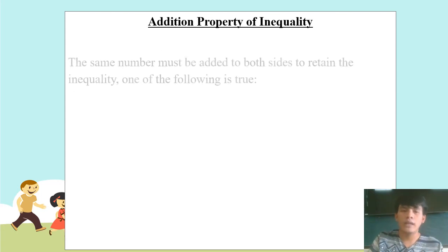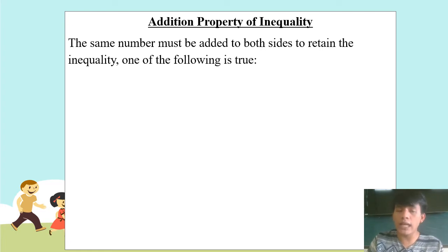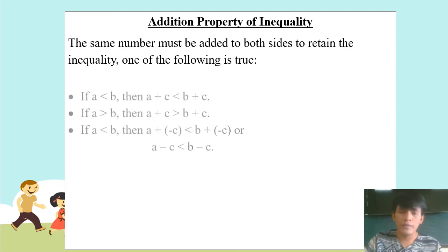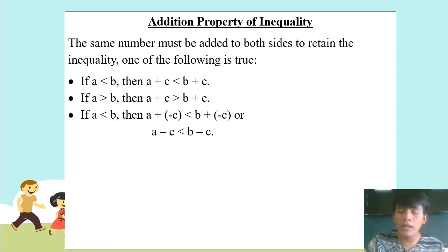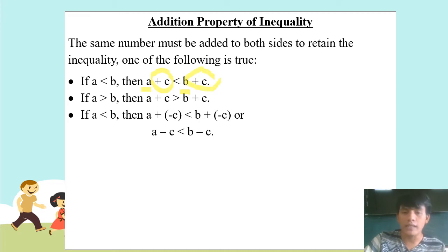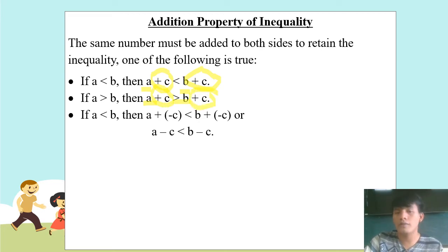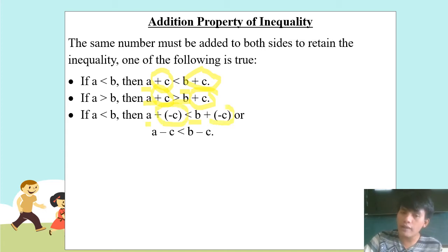Addition property of inequality: the same number must be added to both sides to retain the inequality. If A < B, then A + C < B + C — any number added to the left side must also be added to the right side to keep it balanced. Similarly, if A > B, then A + C > B + C. And if A < B, then A − C < B − C.